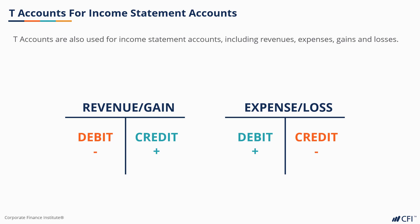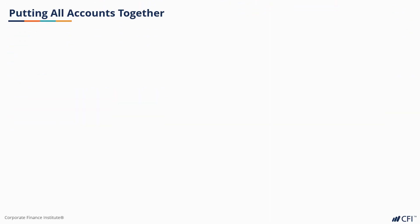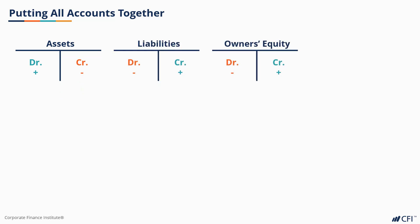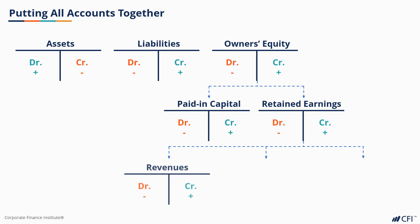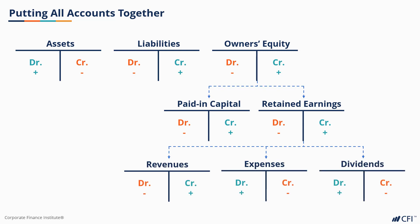Now let's look at how we can put all of the accounts together. Here we have the balance sheet — assets, liabilities, and shareholders' equity. Below that, there is also additional paid-in capital and retained earnings. And then we have the income statement — the revenues, expenses, and dividends for the business. So we can map out where every transaction would be recorded, and we know if it's going to be a debit or a credit, and whether it's going to be an increase or a decrease depending on the account.